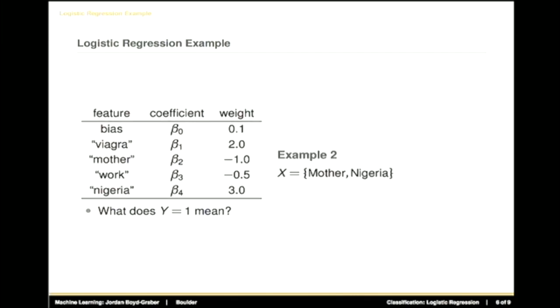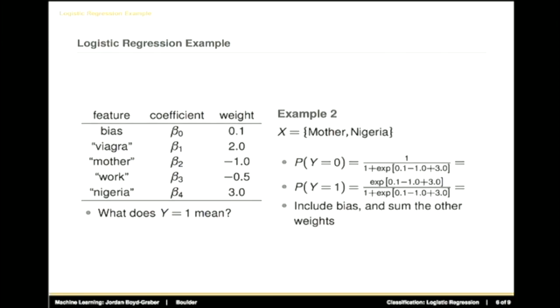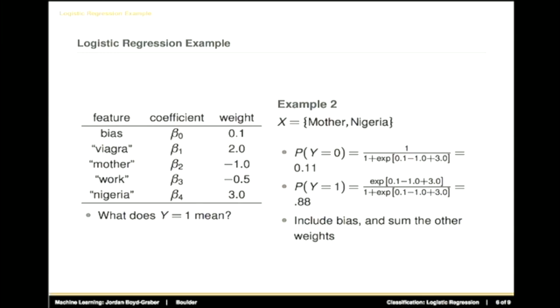So let's take another example. Let's say our document contains mother and Nigeria. Is this going to be spam or not? So mother has a weight of negative 1. Nigeria has one of 3. That's a net positive, so it's going to be classified as spam. Right. And so you also add in the bias there. That makes it even more positive. So again, this is going to be considered spam with much higher probability than our empty document.